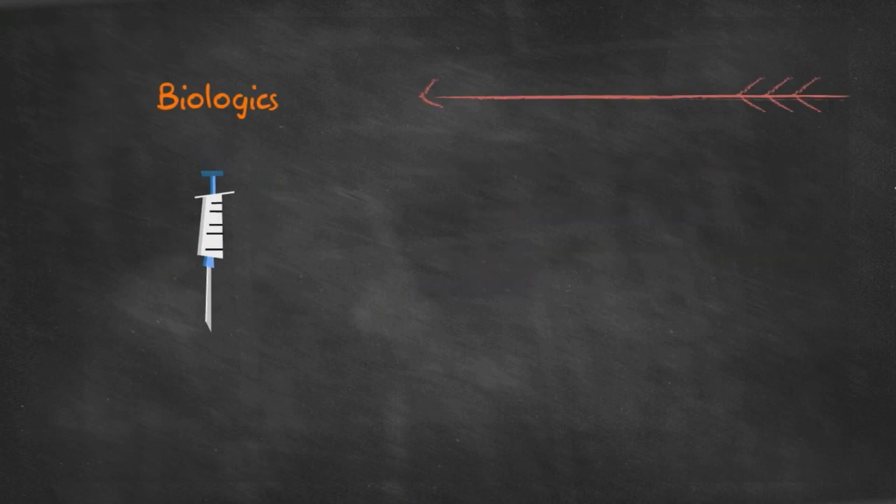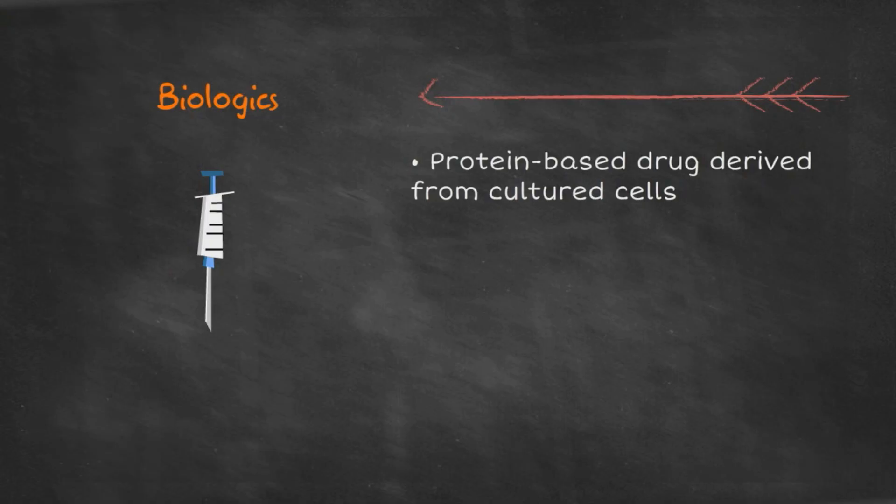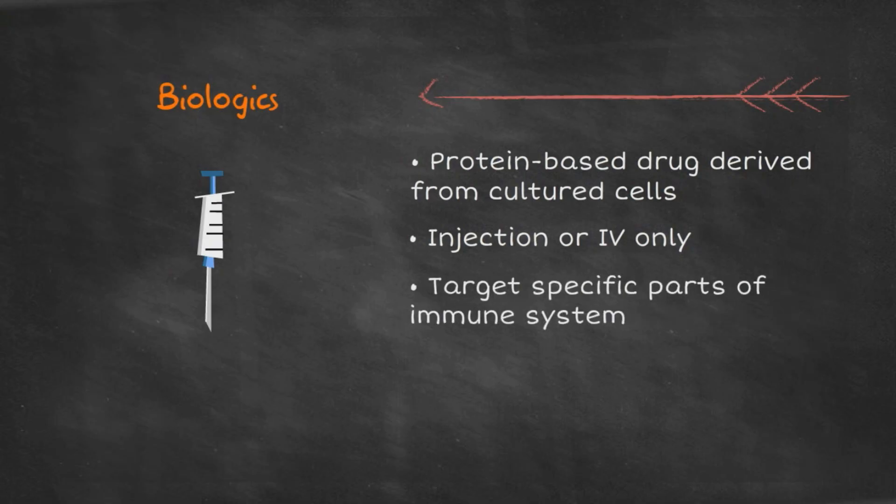Biologics are a subclass of systemics that are protein-based drugs cultured from cells grown in a lab. They are given as injections or IV only. Unlike systemics, which target the entire immune system, biologics are much more specific and target certain inflammatory cells and molecules.